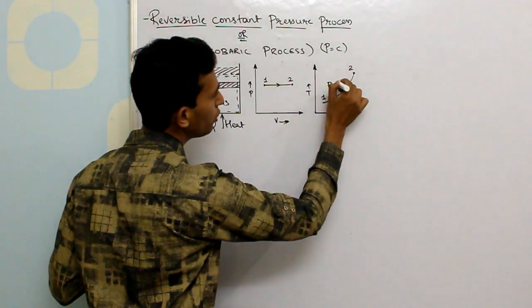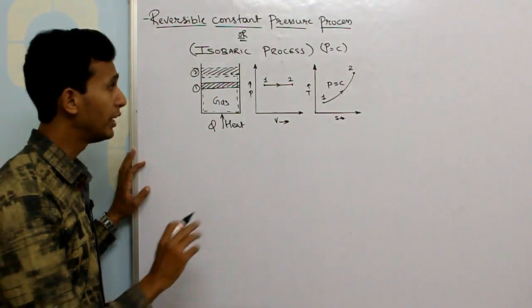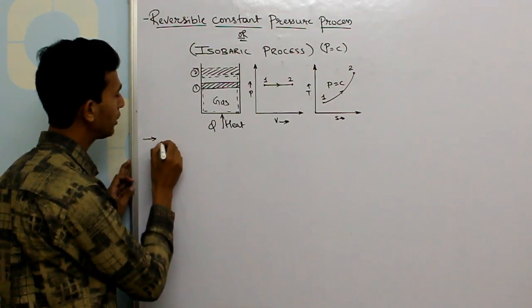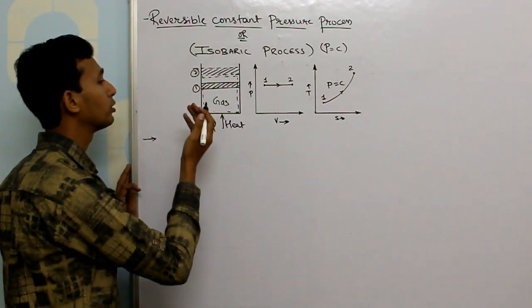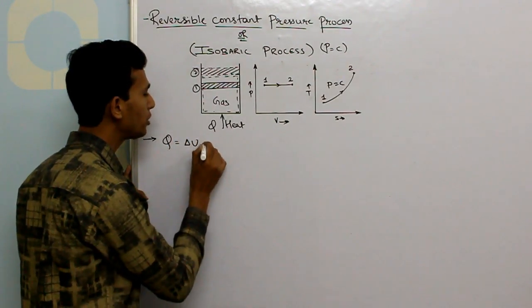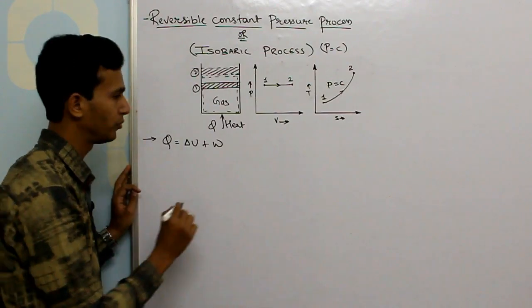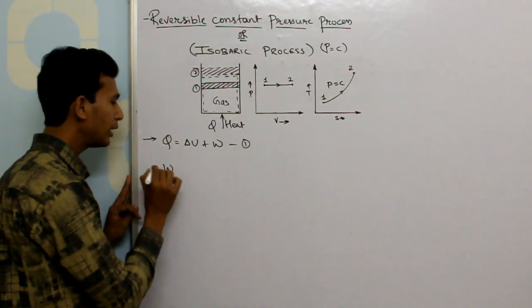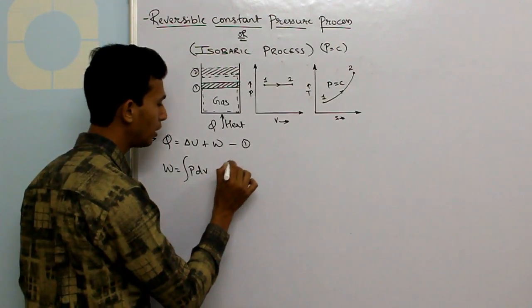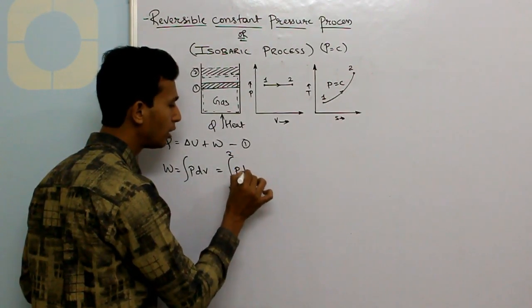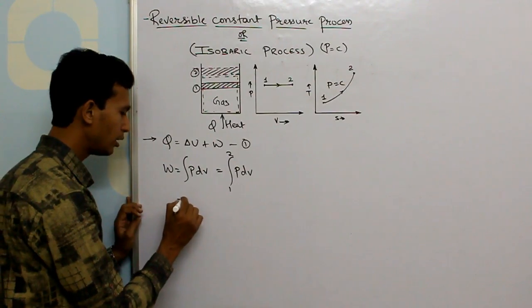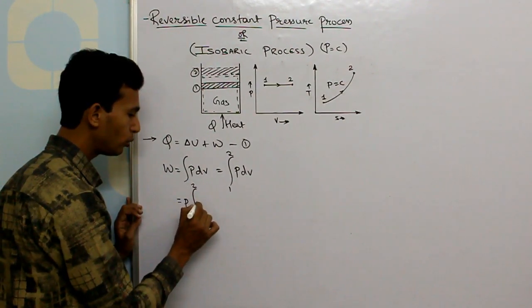Applying the first law of thermodynamics: whenever a closed stationary system undergoes a thermodynamic process, the amount of heat supplied equals the change in internal energy plus the work done by the system — this is equation 1. Work done by any closed system is given by the integral of P dV, which becomes the integral from 1 to 2 of P dV. As pressure is constant, we can take it outside the integration to get P into the integral from 1 to 2 of dV.